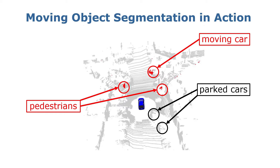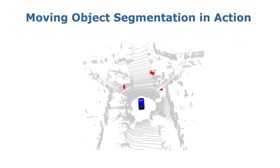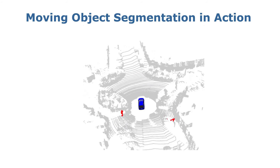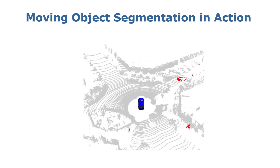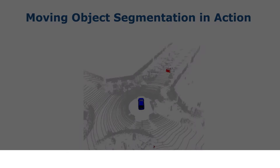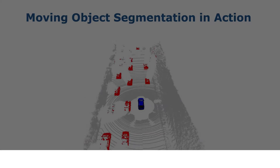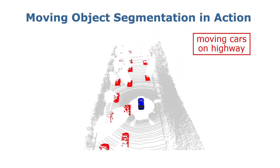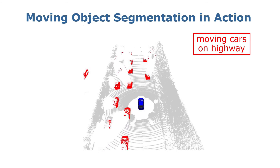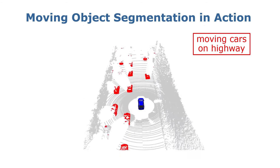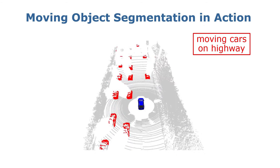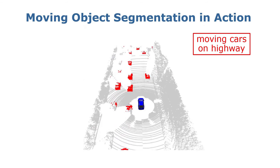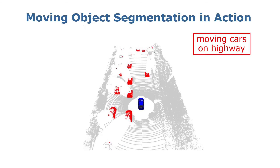Here you can see that our methods can operate online. Our methods can also work on different environments, such as a highway environment, and can well segment out the moving cars from the static background.